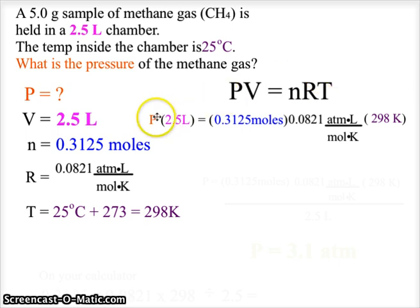We're going to take the equation PV equals nRT and plug in the values. Notice that P is what we are looking for, so we have 2.5 liters, the mole value, the gas law constant, and the Kelvin temperature.